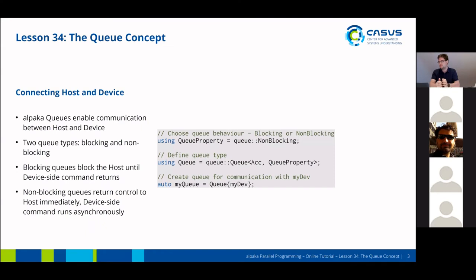This is where the queue concept comes into play. APACA queues enable communication between host and device. We provide two different queue types, both blocking and non-blocking. Blocking queues will block the host until all device-side commands have returned, and non-blocking queues return control to the host immediately, meaning device-side commands will run asynchronously with regard to the host. You typically choose your queue behavior in the beginning using a typedef, deciding on a blocking or non-blocking queue.